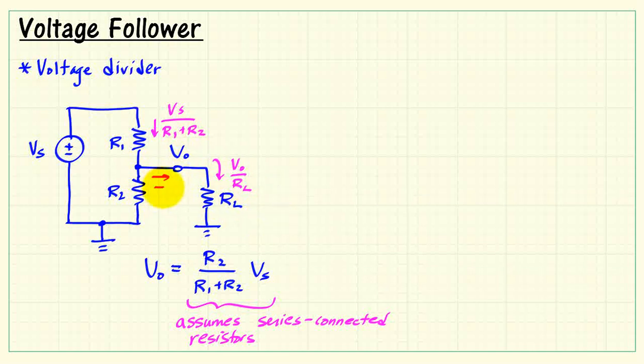That means this current is no longer equal to zero, and our equation can no longer be true. In fact, the output voltage becomes less than the expected value.